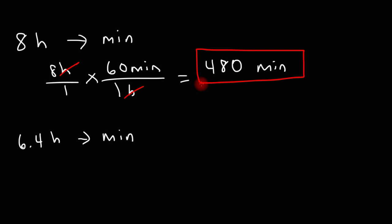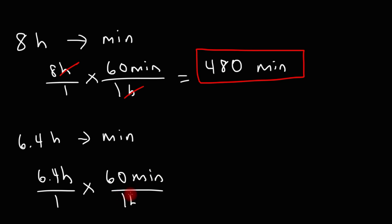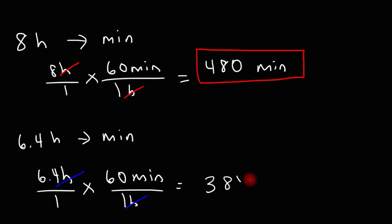For the next one, feel free to pause the video and try it yourself. We have 6.4 hours and we're going to multiply it by 60 minutes per hour. So it's 6.4 times 60, and that gives us 384 minutes.